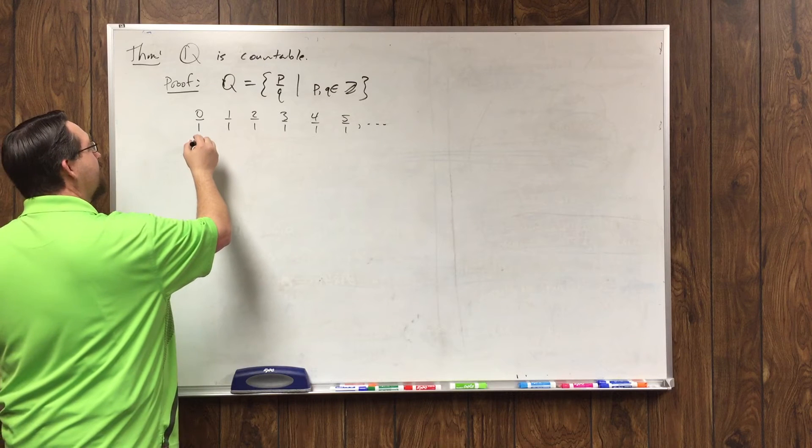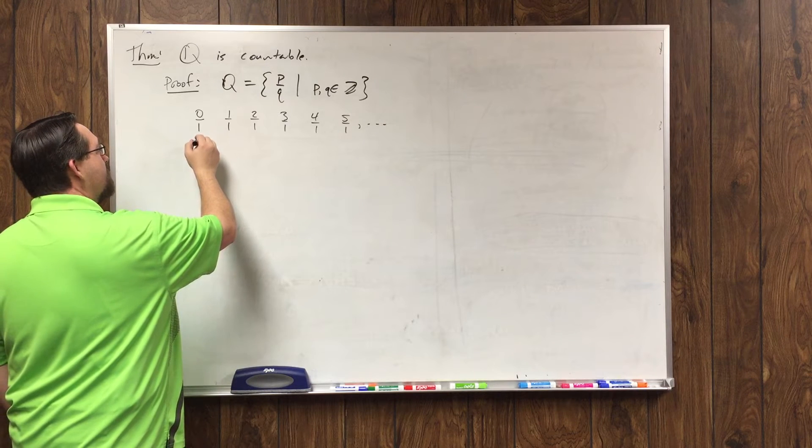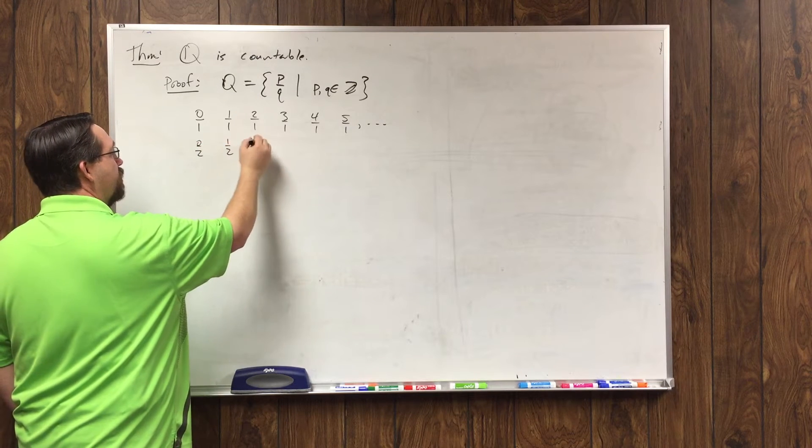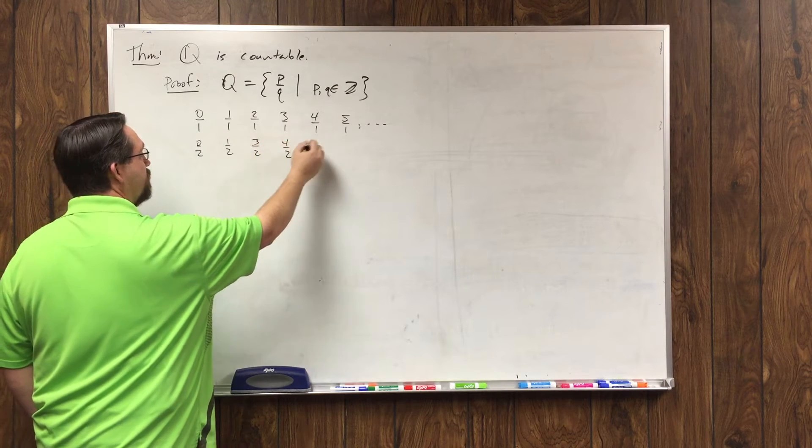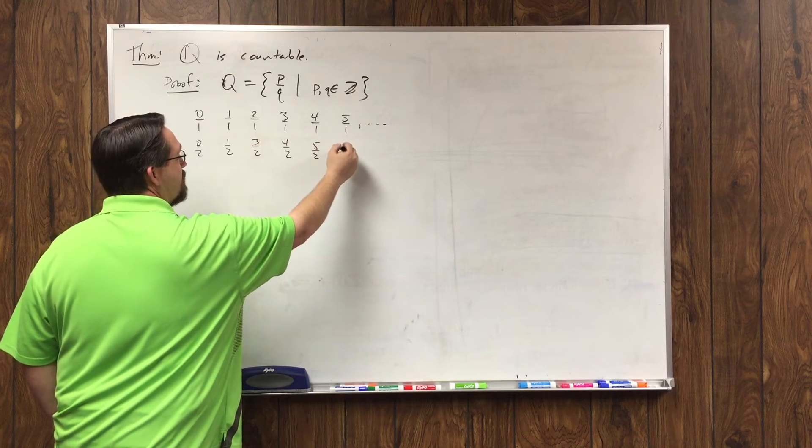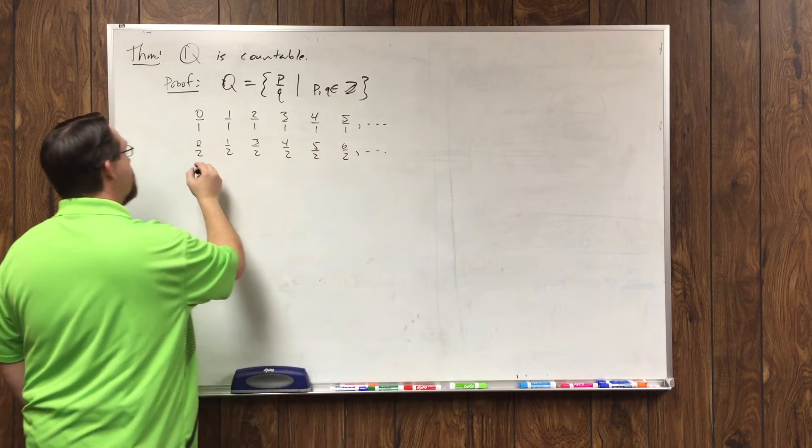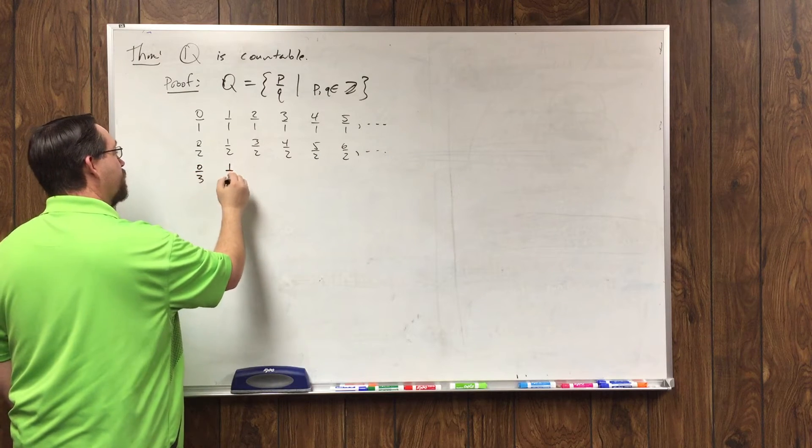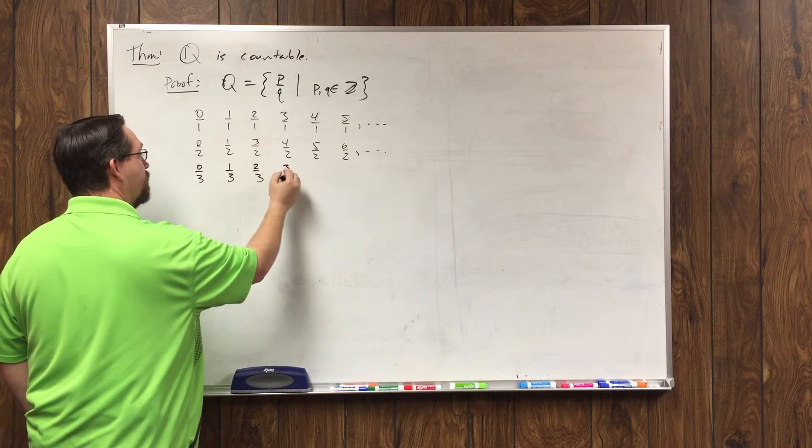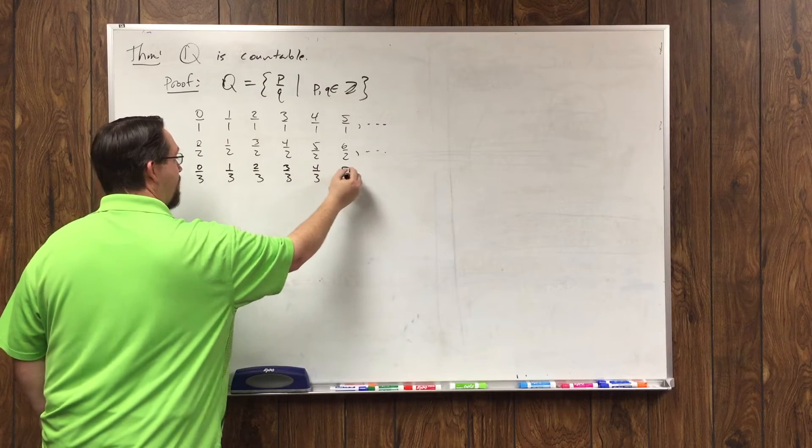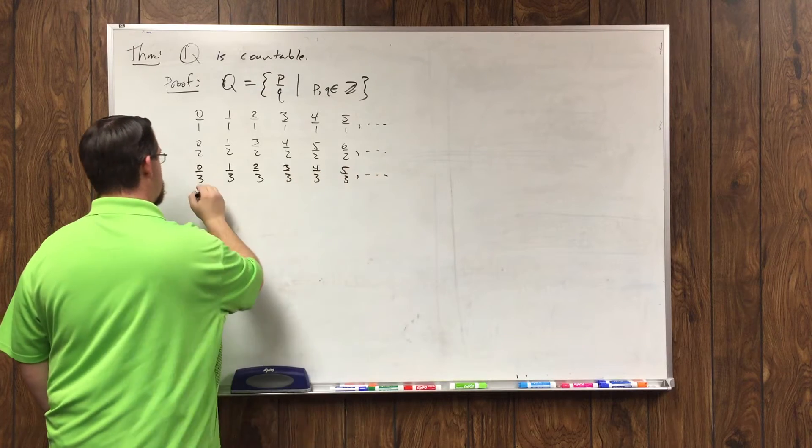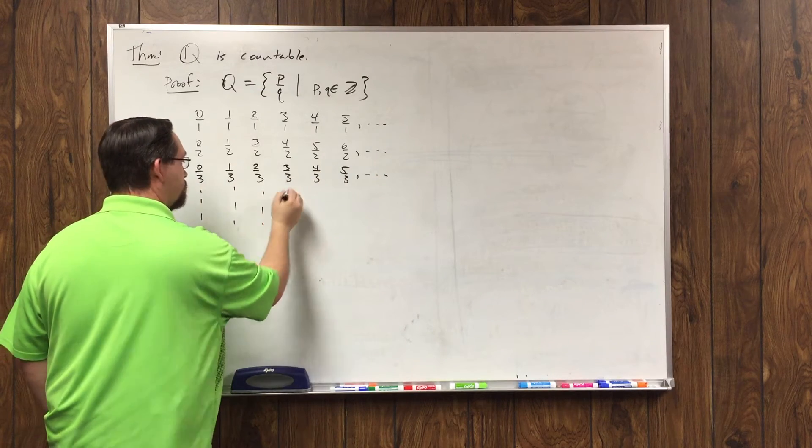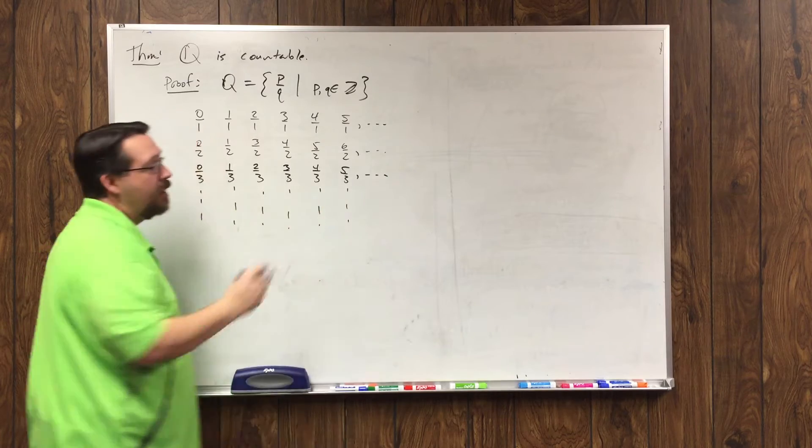Okay, and then let's do 0 over 2, 1 over 2, 3 over 2, 4 over 2, 5 over 2, 6 over 2, and so on. 0 over 3, 1 over 3, 2 over 3, 3 over 3, and keep going on forever.